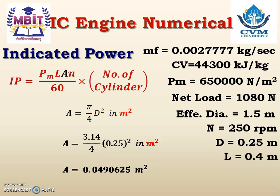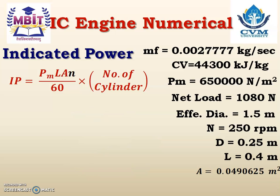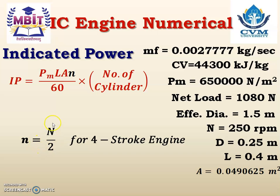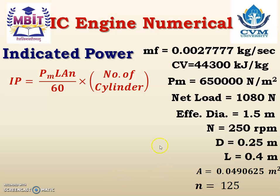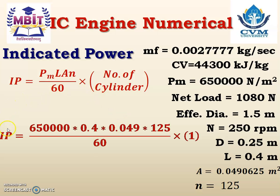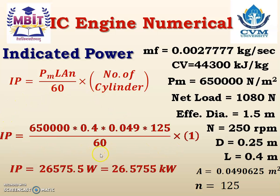Now, how to calculate small n? To calculate small n, we need to know whether the given engine is 4-stroke or 2-stroke. For a 4-stroke engine, small n = N/2. N is the engine RPM, that is 250 rpm. So small n = 250/2 = 125. Number of cylinders is 1. Substituting all values and calculating, we get IP = 26.5755 kW.